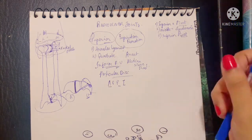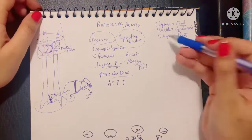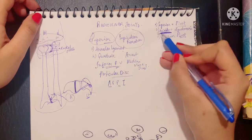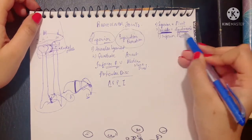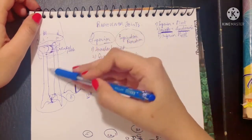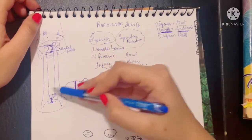The middle radio ulnar joint is a syndesmosis type of joint, which is formed by the interosseous membrane.